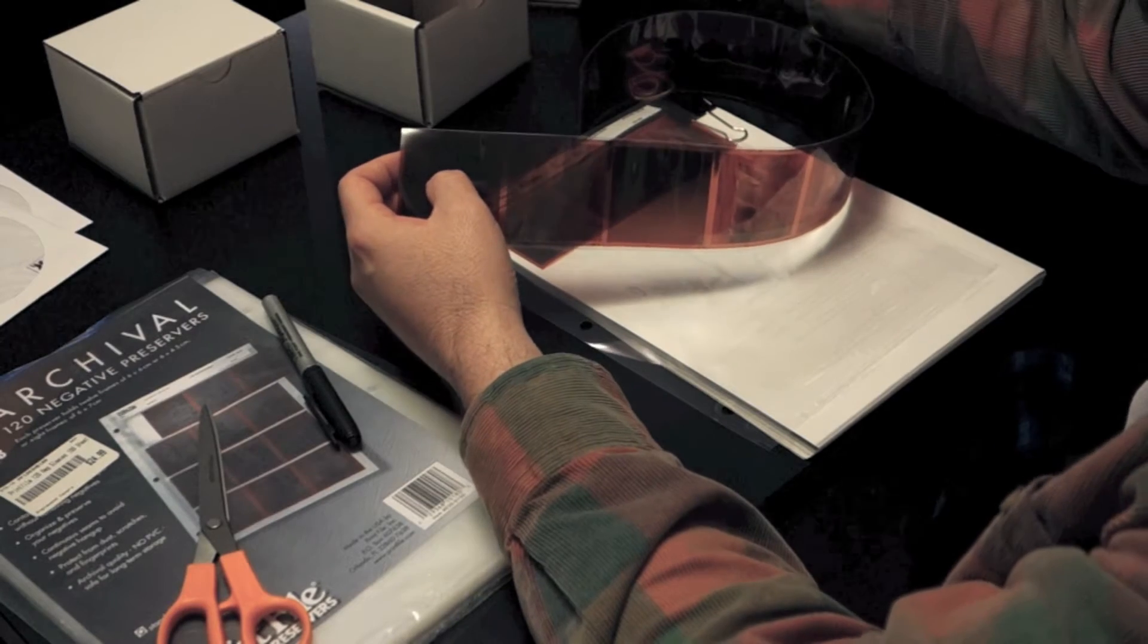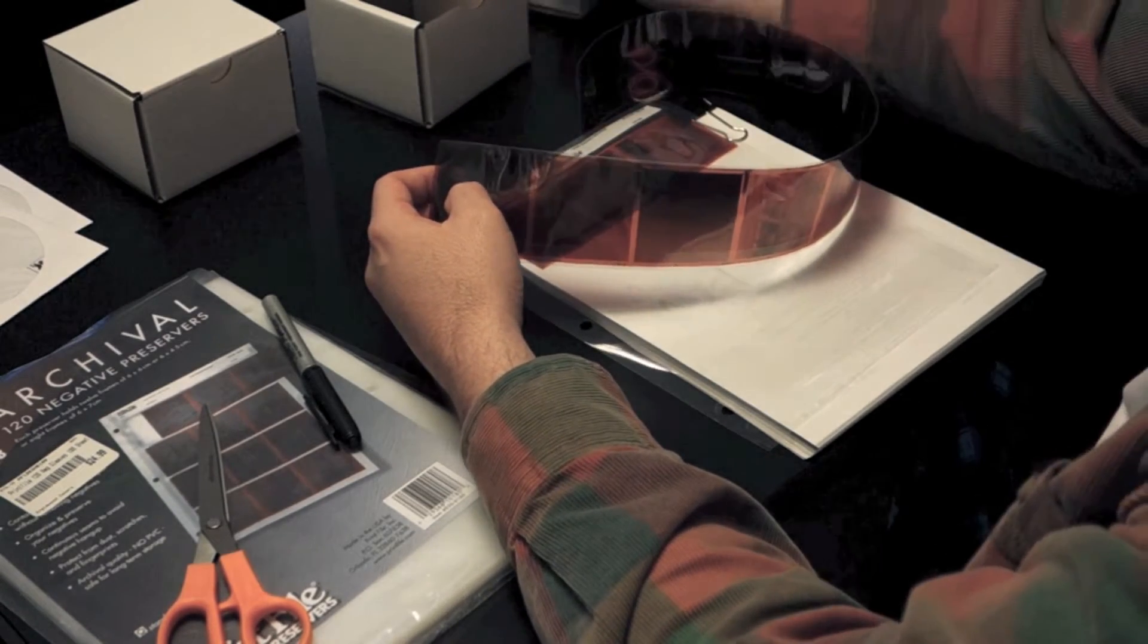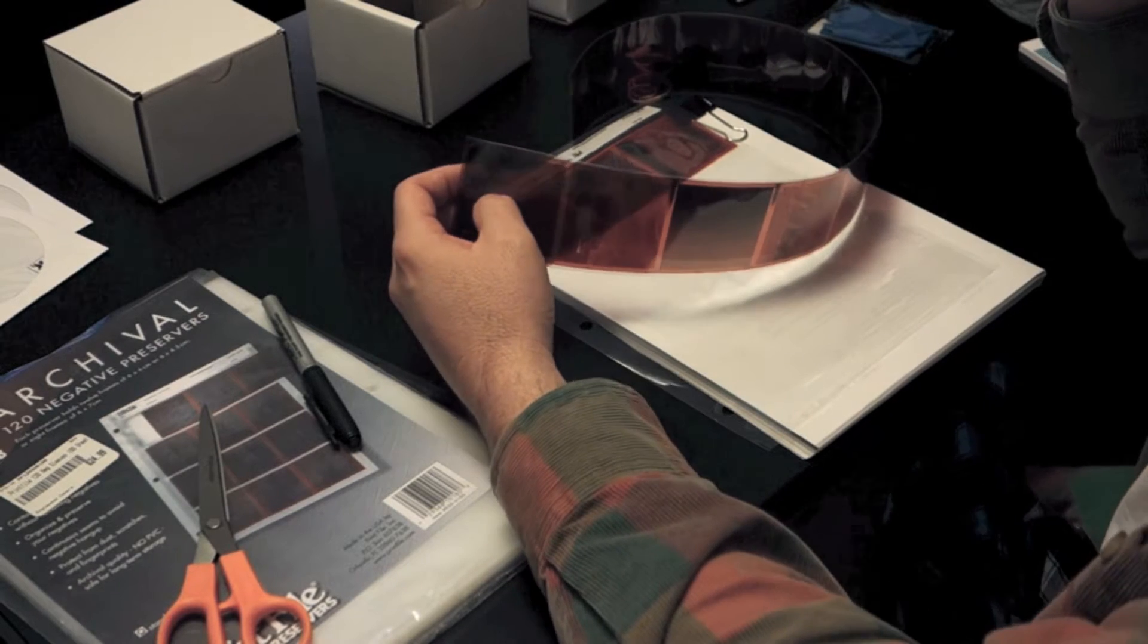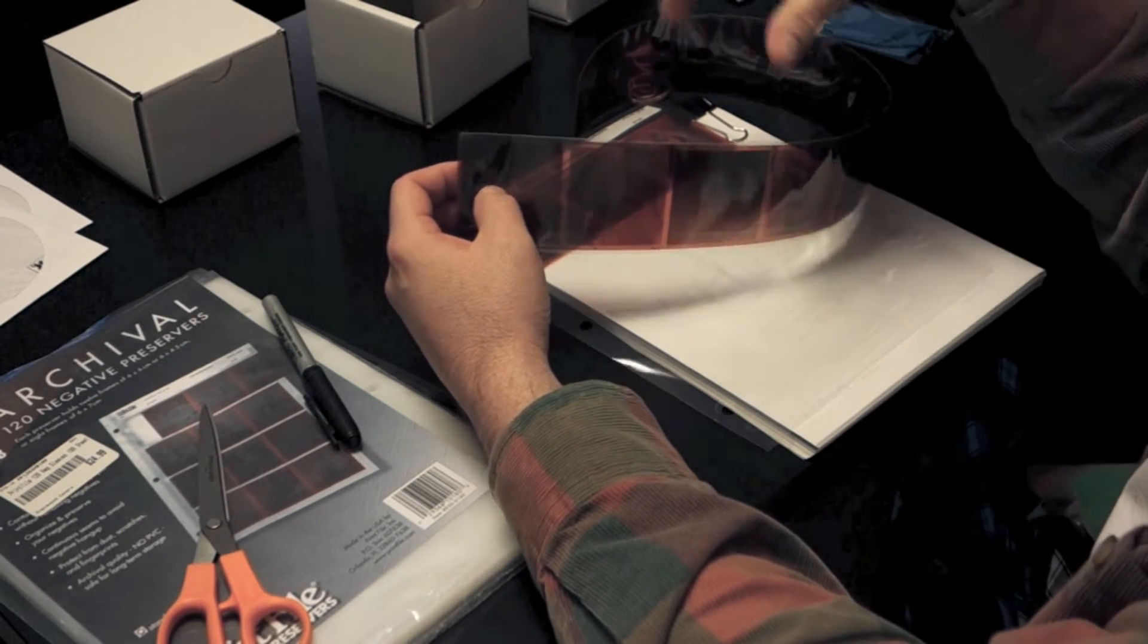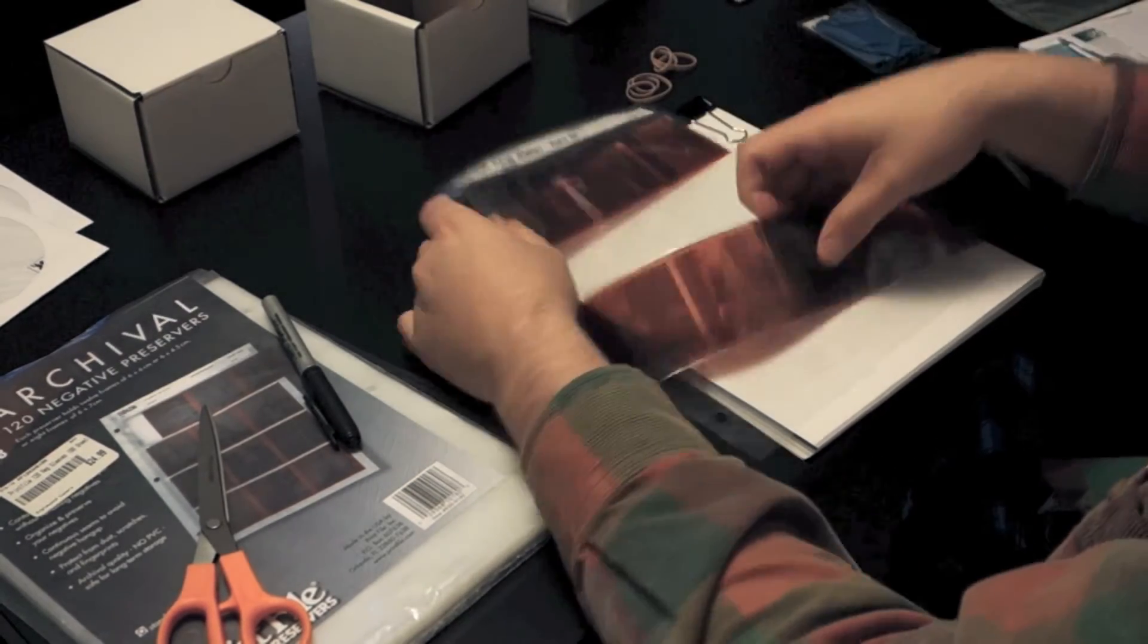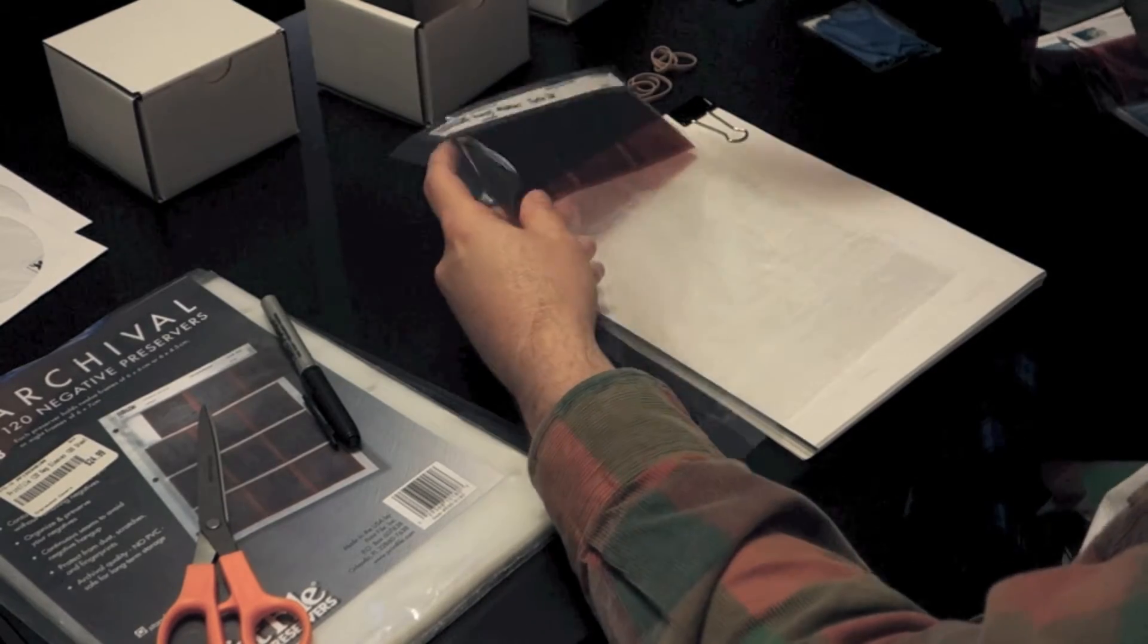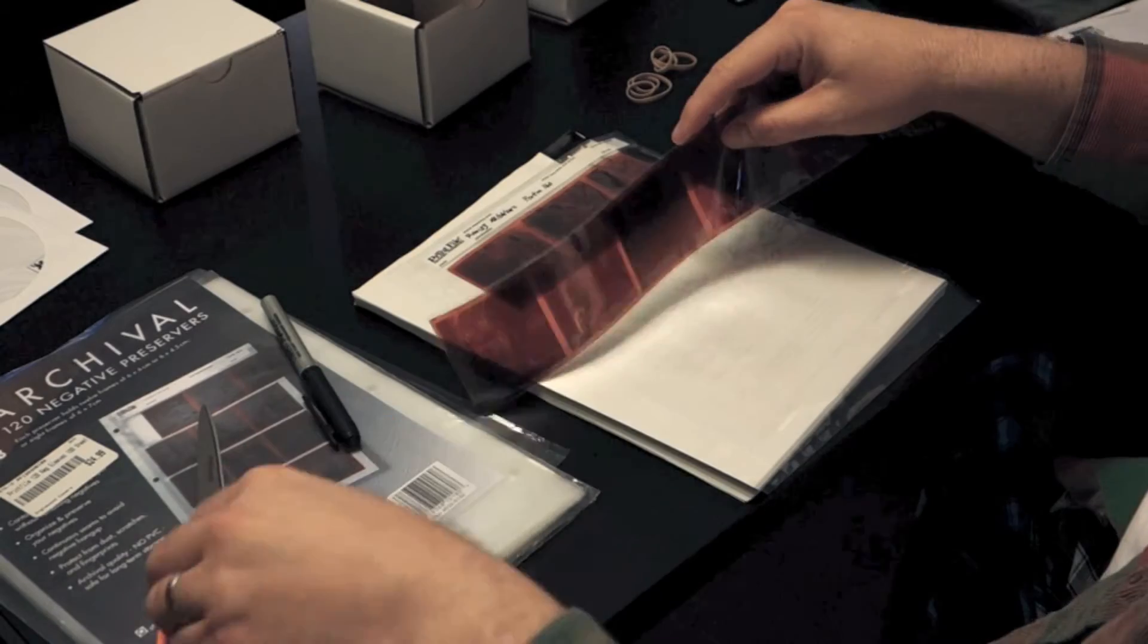I've got a stack of negatives that I had developed because they're color or they were black and white C41 process films. So I kind of let them stack up, and then I finally get around to putting them in my negative sleeves and organizing them. So that's what I'm up to right now is sleeving these negatives.